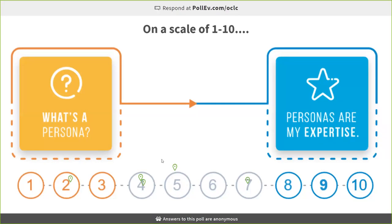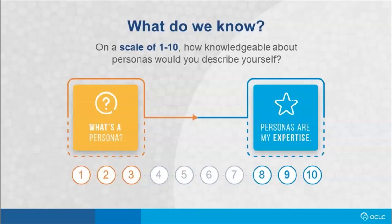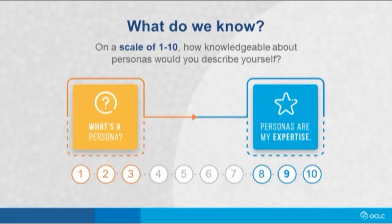I'm seeing some people who are solid fours, we've got a seven - somebody who's a little further on their journey - also a two. A lot of people here to learn today, this is great. We've got some sixes. People are all over the place and we've got a lot of things to learn. This poll is going to remain open for a couple minutes and I'm going to turn things back over to Carolyn so she can take us through. Thank you so much for sharing with us.